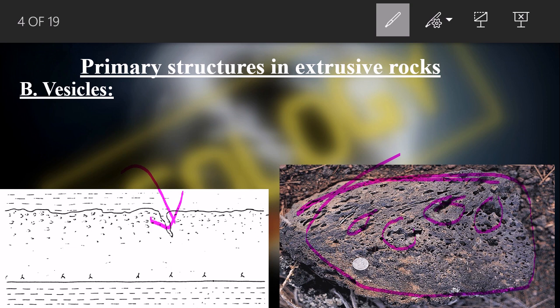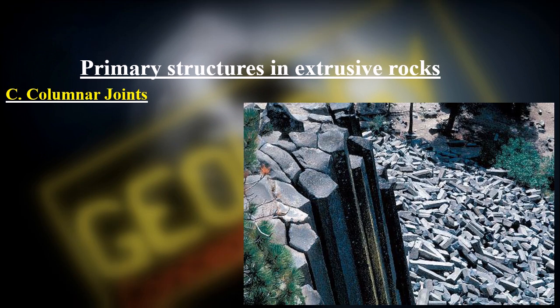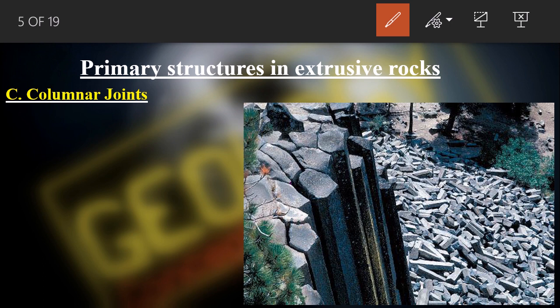Next we have columnar joints. These are three- to six-sided columns, as you can see in the figure, with their long axis perpendicular to isotherms and flow boundaries.